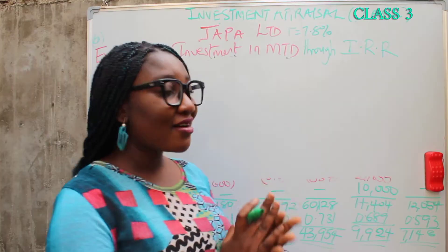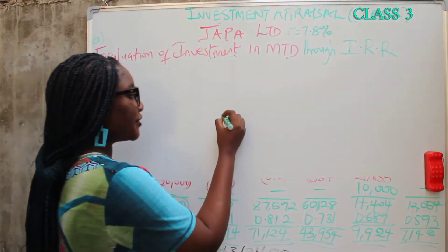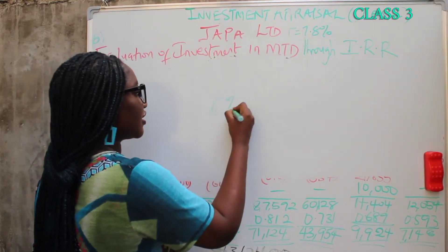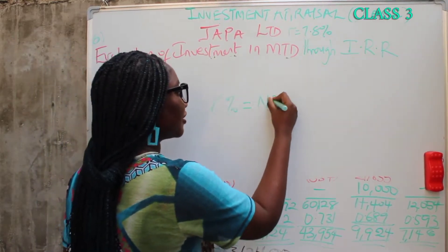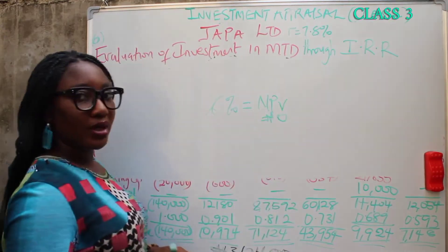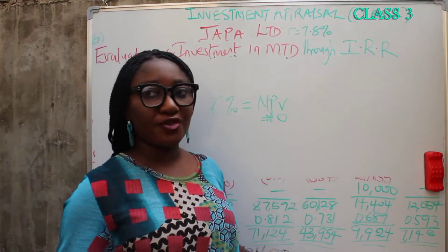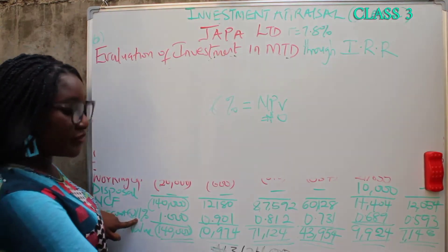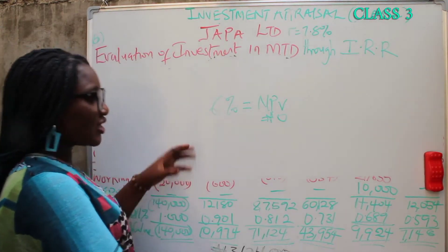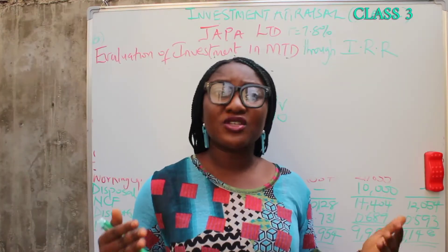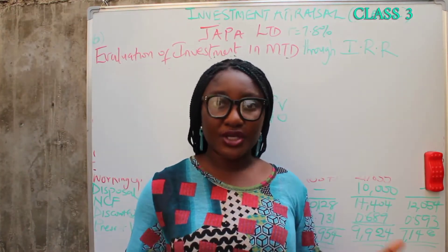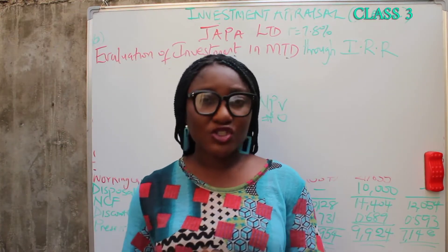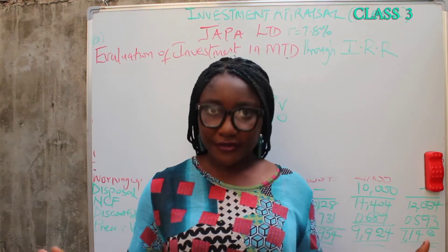IRR is that rate at which your NPV will be zero. Internal rate of return is a particular rate — X percent — a rate at which your NPV will be zero Naira. So it's a discounting rate at which your NPV will be zero. When your NPV is equal to zero, it means there's a break-even in the investment. Your inflows equal your outflows — there's no profit.